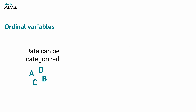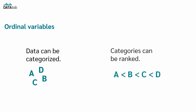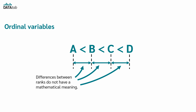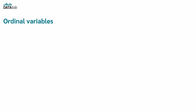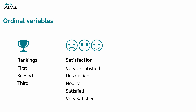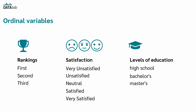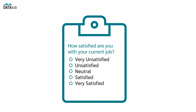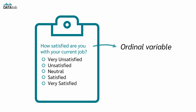What about the ordinal level of measurement? Ordinal data can be categorized, and in comparison with nominal data, it is possible to have a meaningful ranking of the categories. But differences between ranks do not have a mathematical meaning – the intervals between data points are not necessarily equal. Examples of ordinal variables are all kinds of rankings like 1st, 2nd, 3rd; satisfaction ratings such as very unsatisfied, unsatisfied, neutral, satisfied, very satisfied; and levels of education like high school, bachelor's, master's. In a questionnaire, you could ask how satisfied are you with your current job. The answers can be categorized and there is a logical order, making job satisfaction an ordinal variable.